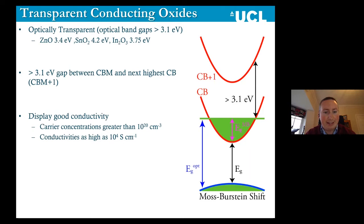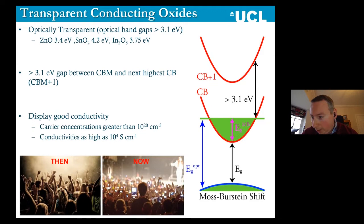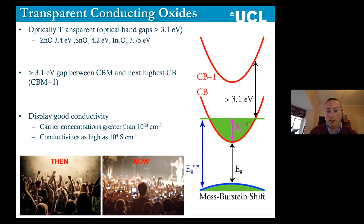These are two pictures I like to show undergrads when I'm teaching them. The picture on the left is what a concert looked like when I was young, and on the right, this is what a concert looks like now. People don't just go and dance — they go and film, and every one of their devices contains a transparent conducting oxide and also contains a battery. That shows you the rise of technology.